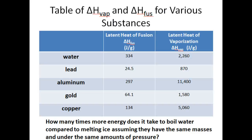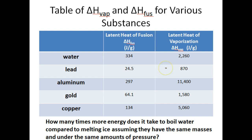If we take a look at this table, it shows the heat of vaporization and the heat of fusion for various substances — water, lead, aluminum, and gold. The heat of fusion for water is 334 joules per gram. If you want to turn one gram of water into water vapor, that water will need to absorb 2,260 joules of energy. For lead, the heat of fusion is 24.5 joules per gram, and the heat of vaporization is 870 joules per gram.